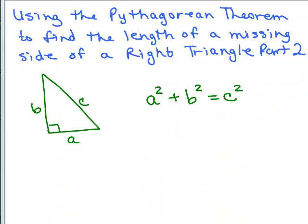Here's a picture of a right triangle where the lengths of the sides are A, B, and C. C is the longest side, the hypotenuse. And the formula is that A squared plus B squared equals C squared.